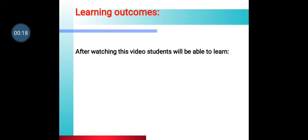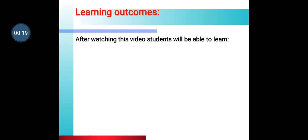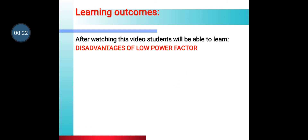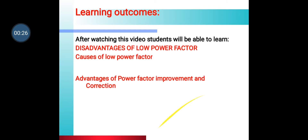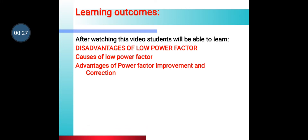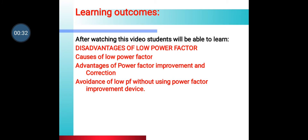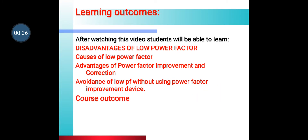Learning outcomes: After watching this video, students will be able to learn the disadvantages of low power factor, causes of low power factor, advantages of power factor improvement and correction, and avoidance of low power factor without using a power factor improvement device. The course outcome is to use equipment for economic operation.